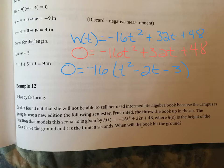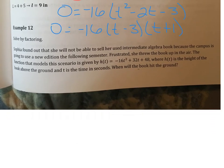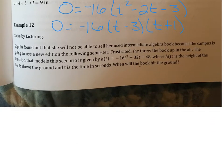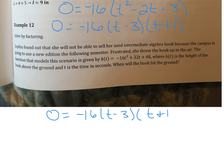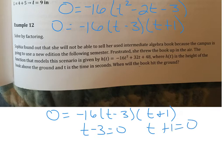We have our GCF of negative 16, and the trinomial factors to t minus 3 times t plus 1. The full factored equation is 0 equals negative 16 times t minus 3 times t plus 1. We can ignore the GCF since it has no variables and doesn't affect the solution. Setting each factor equal to zero: t minus 3 equals 0 gives t equals 3; t plus 1 equals 0 gives t equals negative 1.